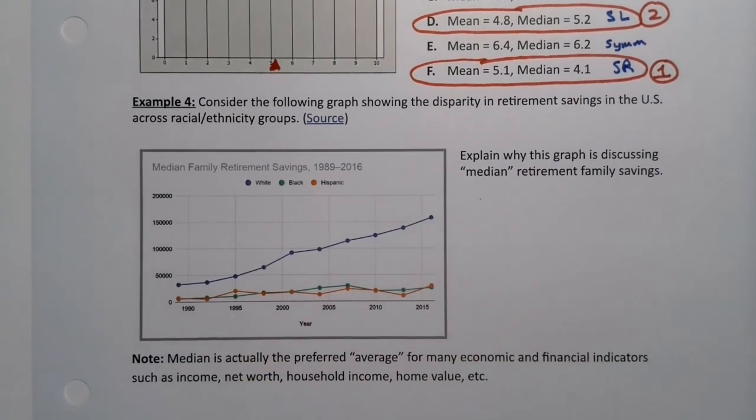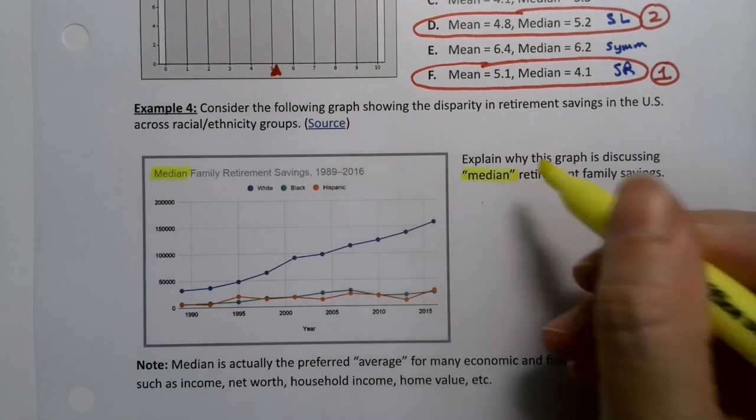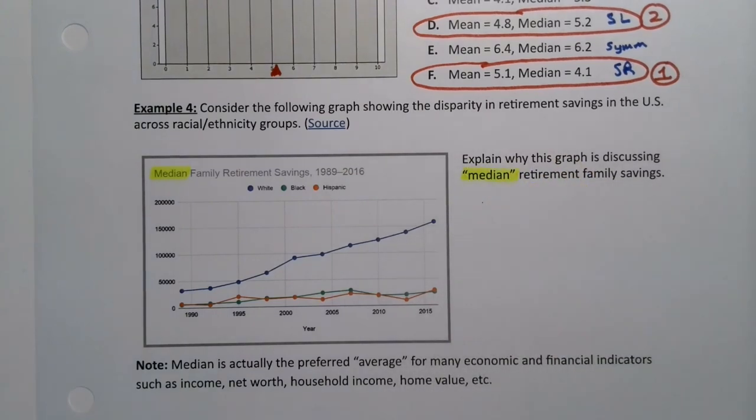Now, one last comment to make about median. This is an actual graph of the median family retirement savings, how much people are saving in retirement for white, black, and Hispanic groups in the U.S. This is real data. I believe it came from the census. This is actual median retirement family savings. Now, the question becomes, why is it that this graph from the internet is saying median? Well, let me check the source. It was a survey of consumer finances that originally gave us this data.